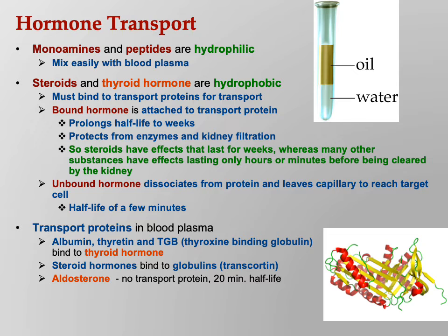Aldosterone is a weirdo — it's a steroid hormone but has no transport protein, so it has a short half-life. That makes sense: aldosterone is released in response to low blood pressure as part of the renin-angiotensin-aldosterone system. Once you activate RAAS, blood pressure will come back up pretty quickly, so you don't want aldosterone to remain active for weeks — that would cause chronic hypertension. It makes perfect sense that aldosterone is the exception: no transport protein, therefore a short half-life.